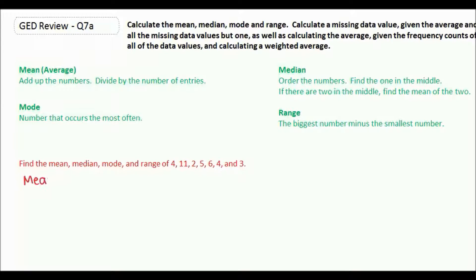So for mean, we're going to add up the numbers: 4 plus 11 gives you 15, plus 2 is 17, plus 5 is 22, plus 6 is 28, plus 4 is 32, plus 3 is 35. So the sum was 35.